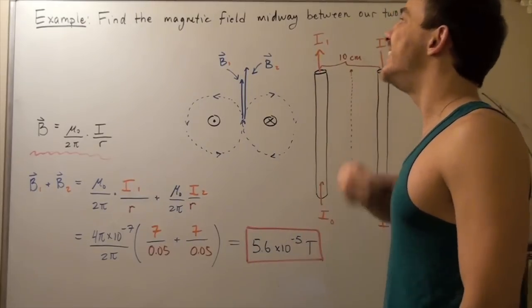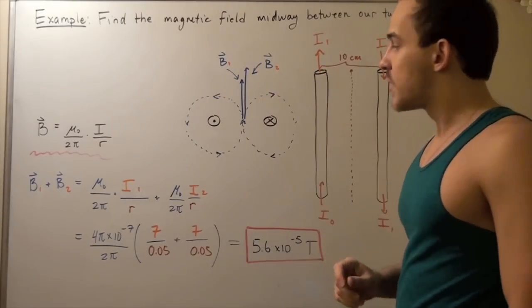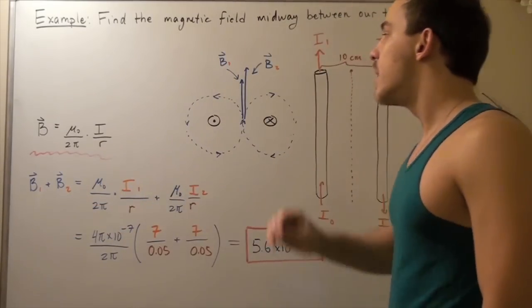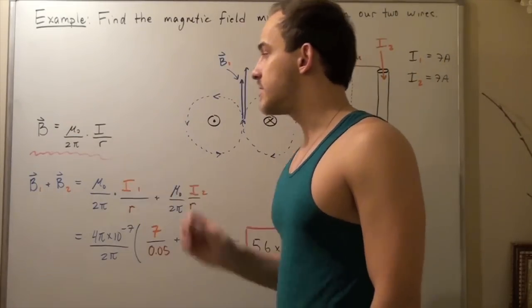So to find my net magnetic field midway, I simply add these two guys up. So let's add these two guys up. But let's first recall what the formula for our magnetic field is.